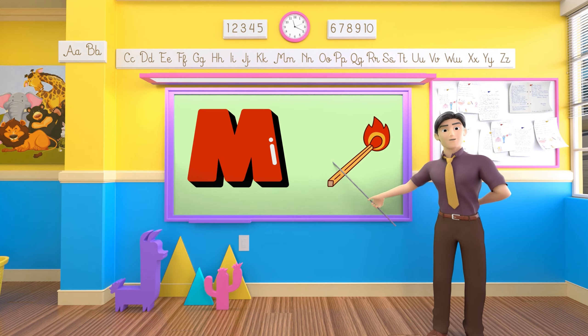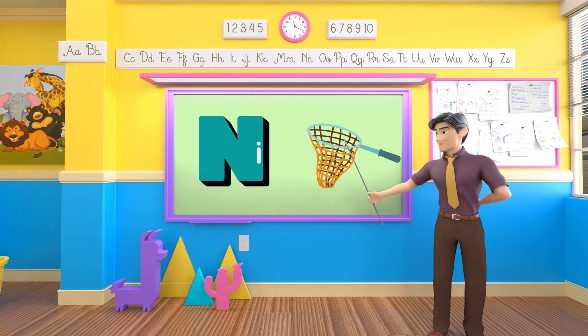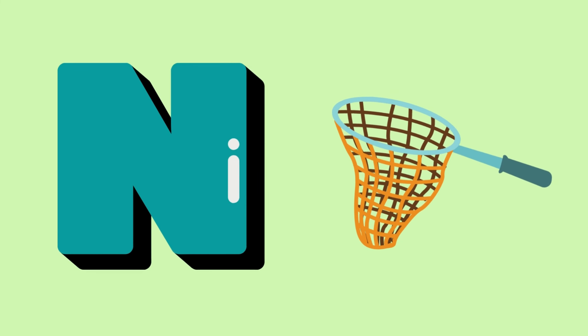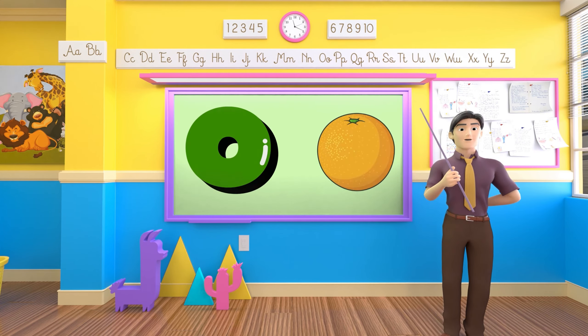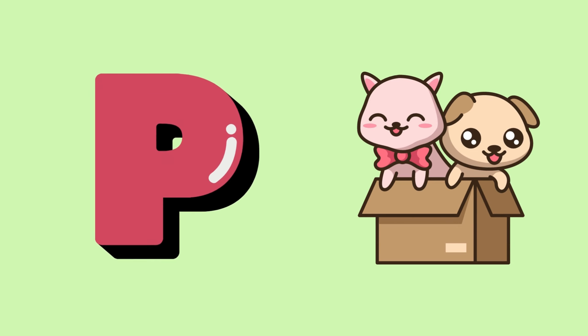M is for mat, m-m-mat. N is for net, n-n-net. O is for orange, o-o-orange. P is for pet, p-p-pet.